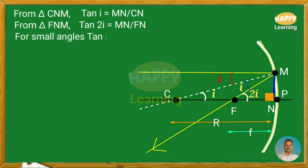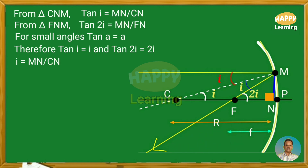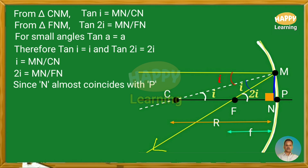For small angles, tan a is equal to a — that is, tan theta is equal to theta. Therefore, tan i is equal to i and tan 2i is equal to 2i. We can then write i is equal to MN by CN, and 2i is equal to MN by FN. Since the foot of the perpendicular N is almost coinciding with P, we can use P in place of N.